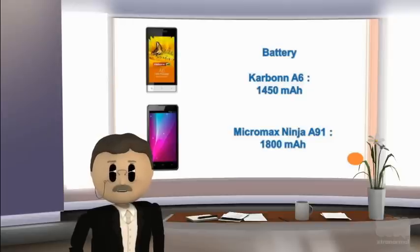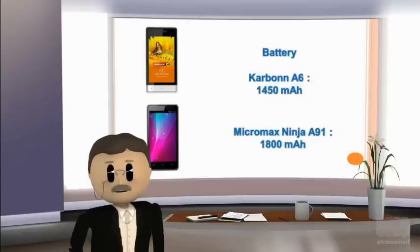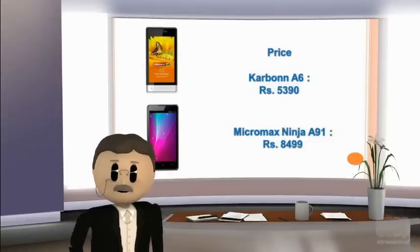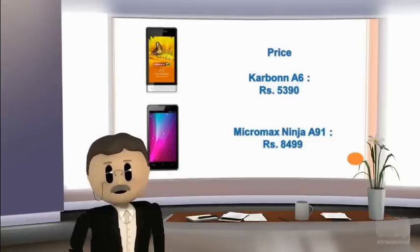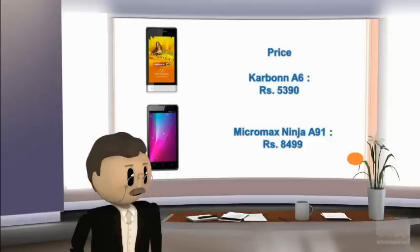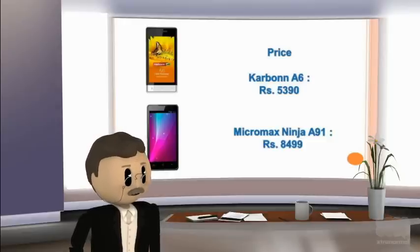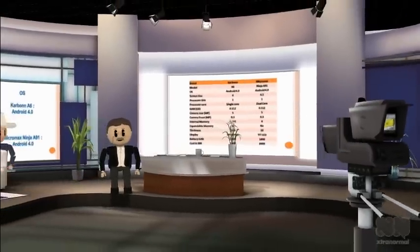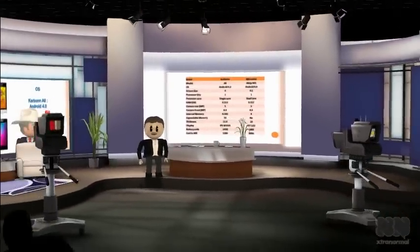Battery of Karbonn A6 is 1450 mAh, and battery of Micromax Ninja A91 is 1750 mAh. Price of Karbonn A6 is 5,390 rupees, and price of Micromax Ninja A91 is 8,499 rupees. Overview specifications of Karbonn A6 and Micromax Ninja A91.